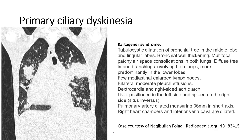In another case of Kartagener syndrome, there is tubular and cystic dilatation of the bronchial tree in the middle lobe and lingula. Bronchial wall thickening and mucus plugging are seen in both lungs, more predominant in the lower lobes.